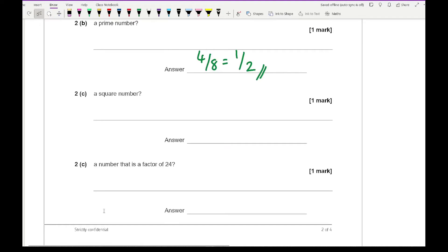Then 2c says which of these is a square number? The only two square numbers we've got are 1 and 4, so that's 2 out of 8 which is a quarter. Then it says a number that is a factor of 24. The factors of 24 are 1, 2, 3, 4, 6, and 8. There are 6 numbers out of 8 which simplifies to 3 quarters.